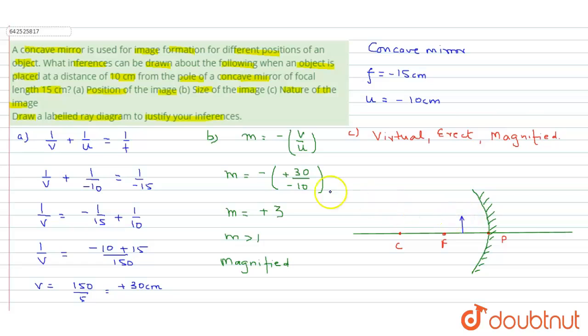Now, to trace the ray diagram, we will take a light ray, which is parallel to the principal axis, like this. And after reflection, it will pass through the focus of the mirror.